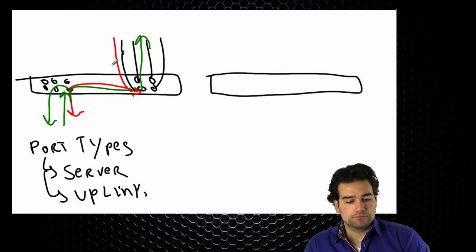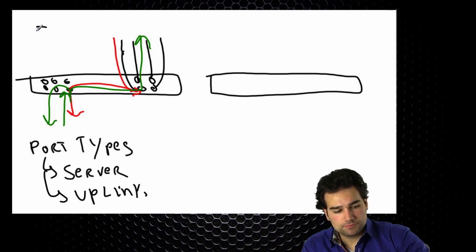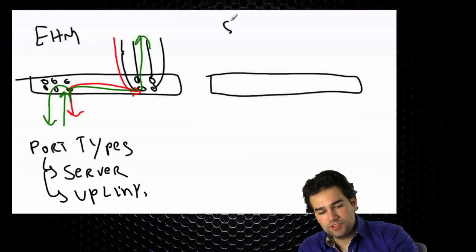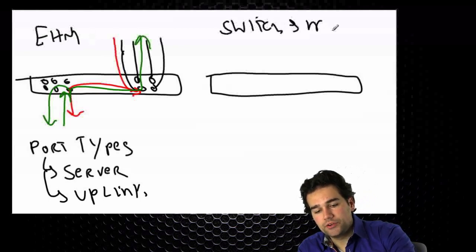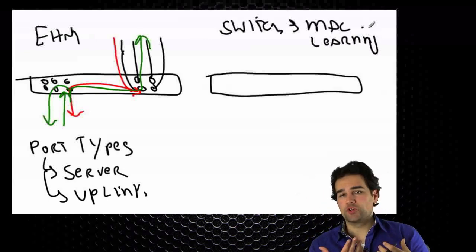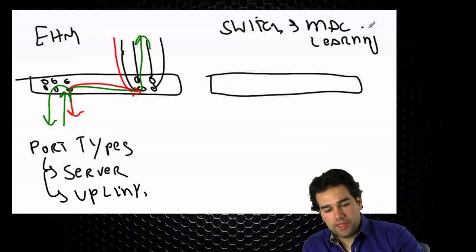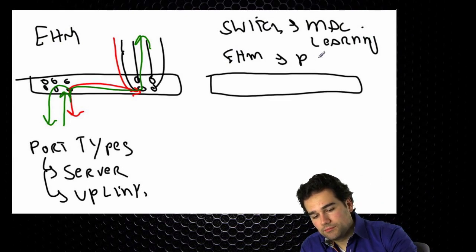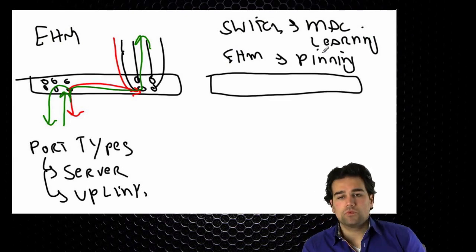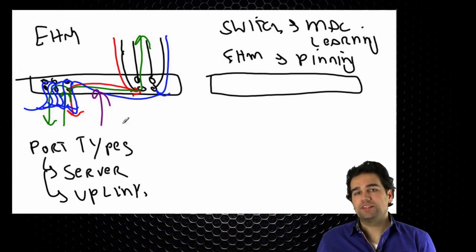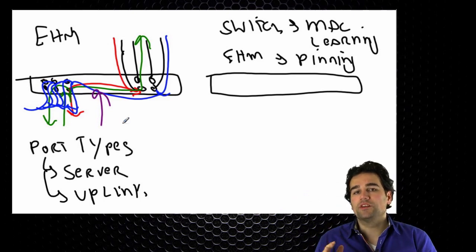This end-host mode uses a concept known as port pinning. A normal switch uses MAC learning — when I receive a packet on a port, I learn about the source address. End-host mode uses pinning, or static pinning. For flooding traffic, I exclude the uplinks and flood only on the server ports, and I only flood once on the server port.